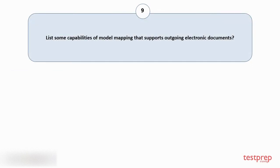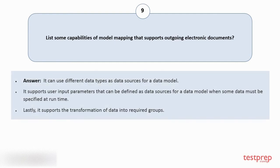Question number 9: List some capabilities of model mapping that supports outgoing electronic documents? 1. It can use different data types as data sources for a data model. 2. It supports user input parameters that can be defined as data sources for a data model when some data must be specified at runtime. 3. It supports the transformation of data into required groups.